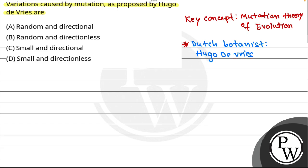He had some key points in this theory. First of all, mutation is a discontinuous variation — meaning it is not a small, gradual change.